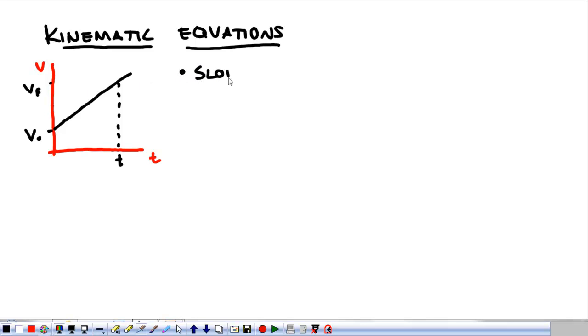One, the slope of this graph is equal to the acceleration. And two, the area of this graph is equal to displacement, or our change in position.